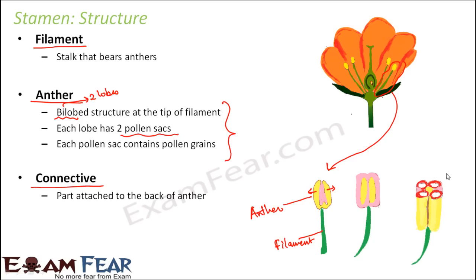If you look at the cross-section or top view of the anther, you can see two lobes, each with two pollen sacs, giving four cup-shaped structures in total. Inside these pollen sacs you have pollen grains, and pollen grains are the male gametophytes that contain the male gametes. The connective is present because the anther is made up of two lobes that need to be joined and kept intact.